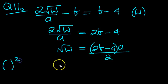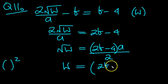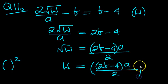Let's square both sides. This side will be w, and this side squared. So you'll have 2b minus 4 times a all over 2, bracket squared. There we go.